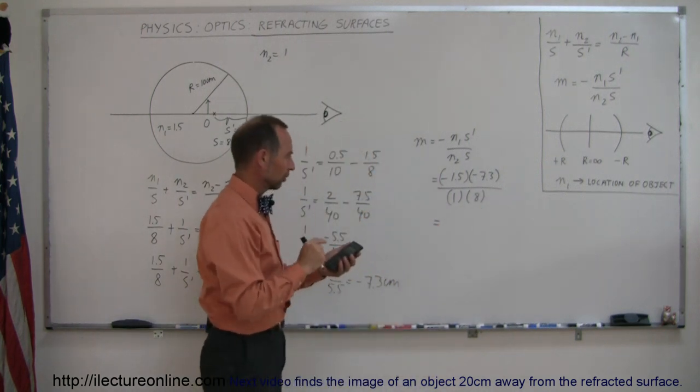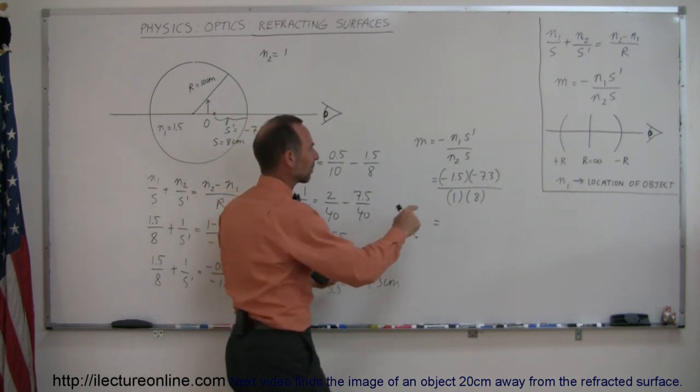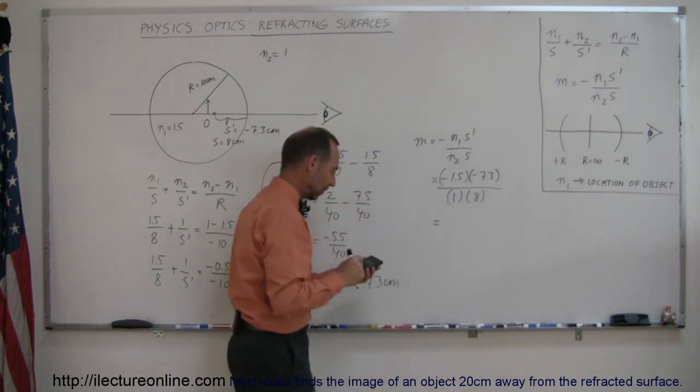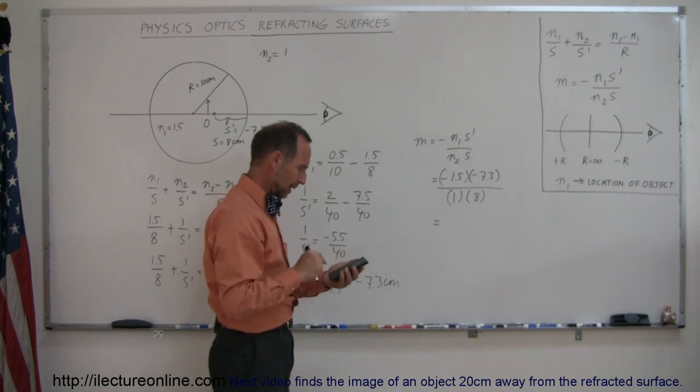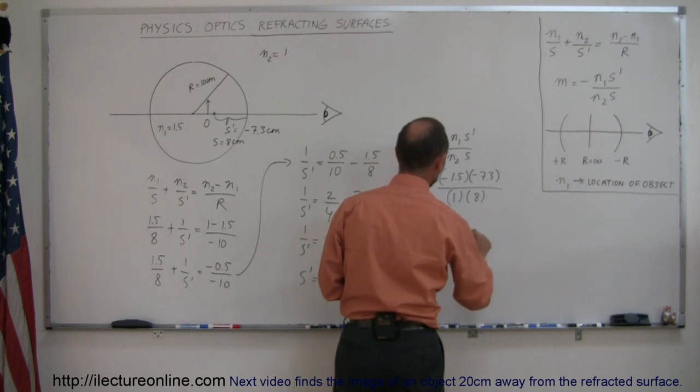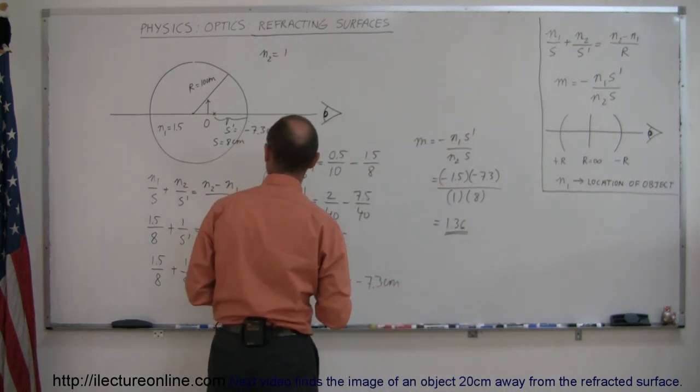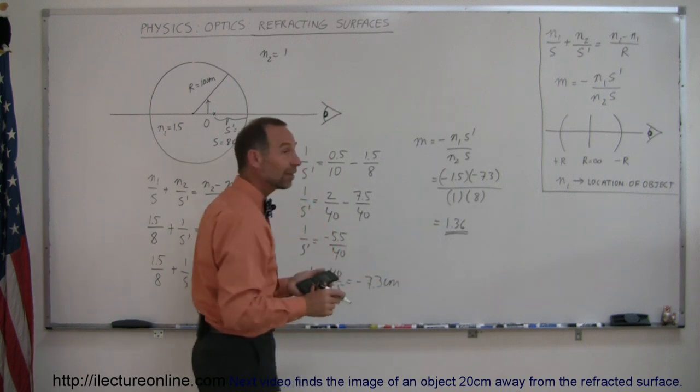What is that equal to? So that number times 1.5, and notice that the signs cancel out, divide by 8, and we get 1.36, which means it's 36% bigger than the object, and it is positive, that means it is upright.